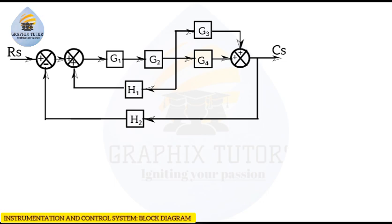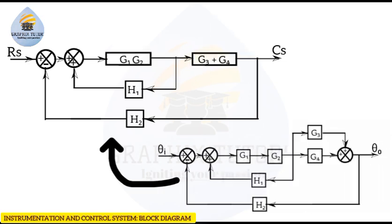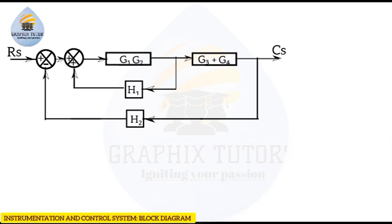So if I reduce this diagram, this is what I will be having, as you can see on the screen. I have made g1 and g2 into a single block by multiplying them, due to the fact that they are in series. I have also made g3 and g4 into a single block by adding them, due to the fact that they are in parallel. Everything else remains the same, but because I've converted g3 and g4 in parallel into a single expression, I no longer write the summing point associated with them.